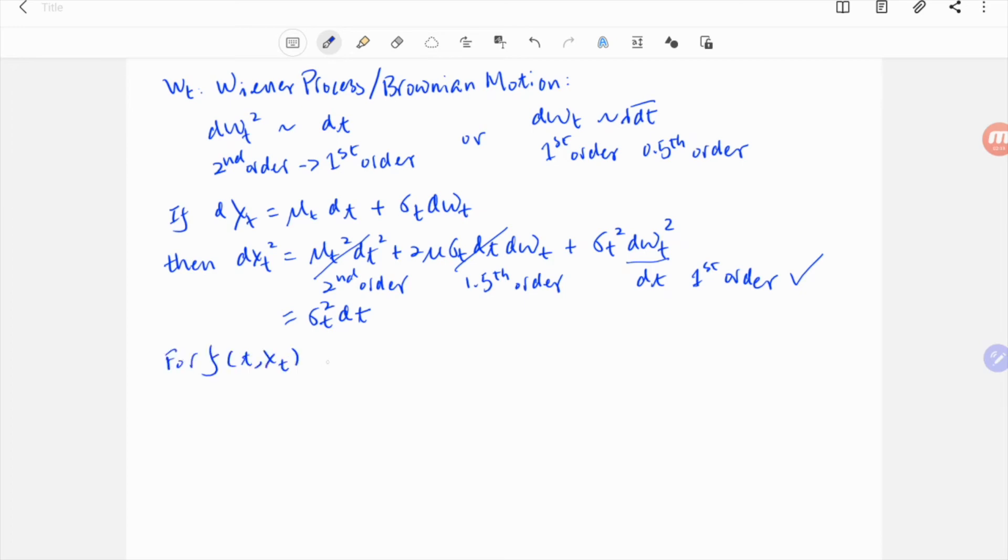If a function is dependent on both t and xt, when differentiating this function, we now have to go to the second order in dxt, because it's still the first order in dt.